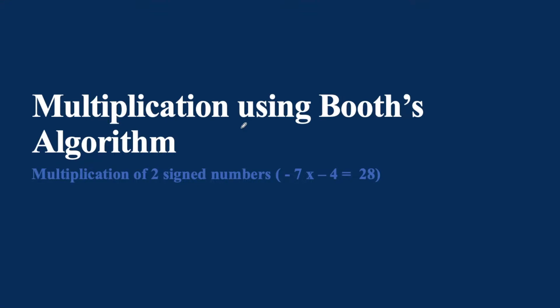In this video we will be using Booth's algorithm to multiply two signed numbers. For our example we have taken two different signed numbers, minus 7 and minus 4, which we will be multiplying in order to get a positive resultant which is 28.